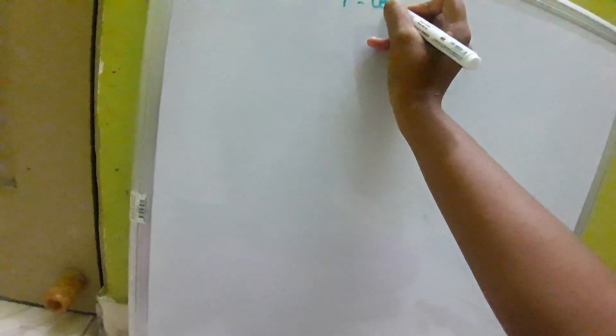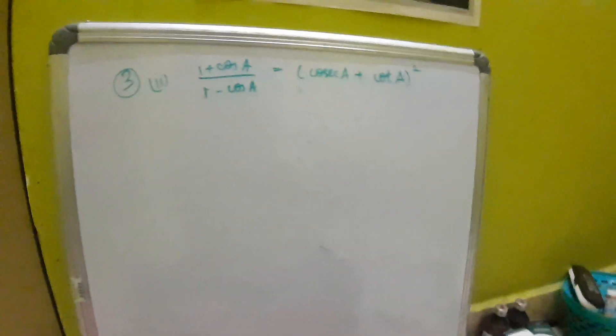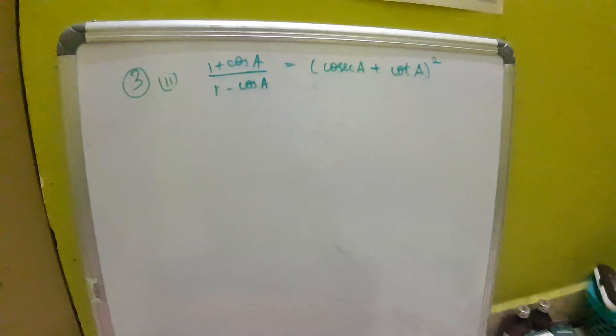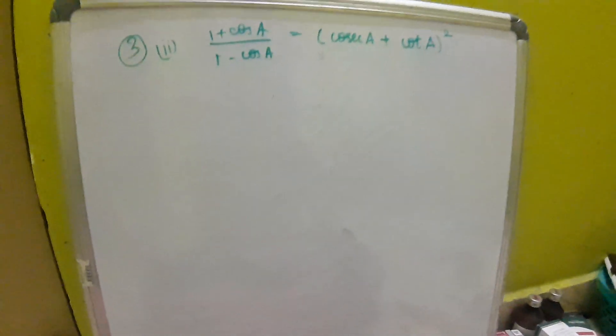The question is: 1 plus cos A divided by 1 minus cos A, which is equal to cosecant A plus cot A, the whole square. Now we are going to solve it.